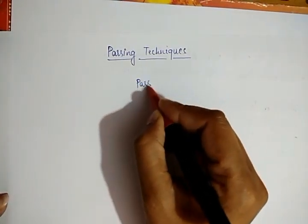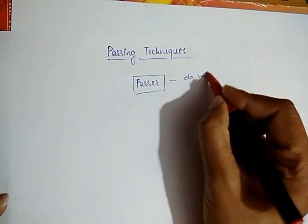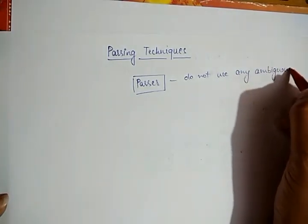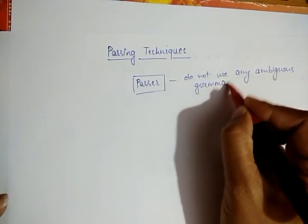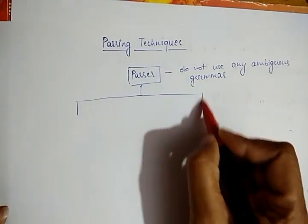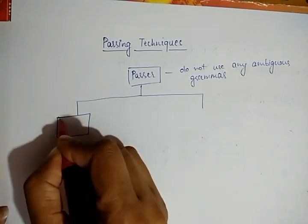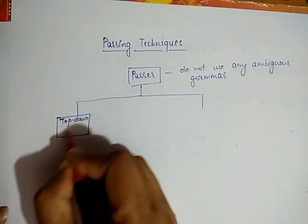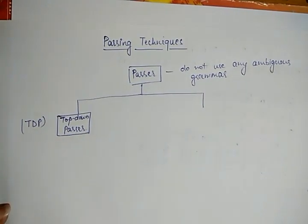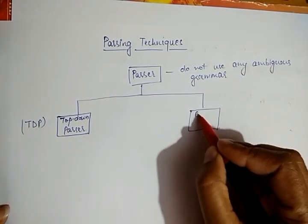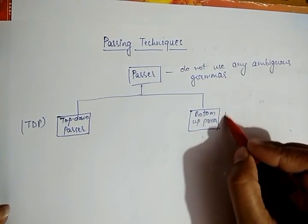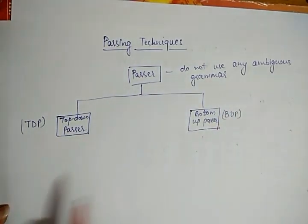Parsers do not allow ambiguous grammar — if a grammar is ambiguous, it cannot be used in a parsing technique. Parsers are of two types: one is the Top-Down Parser, which we abbreviate as TDP, and another is the Bottom-Up Parser, abbreviated as BUP.